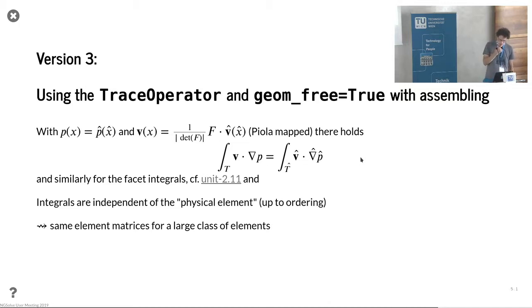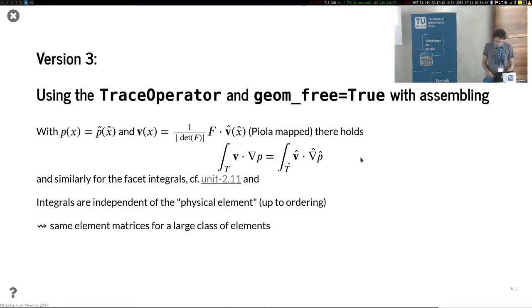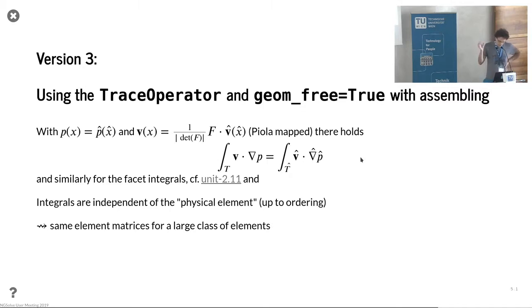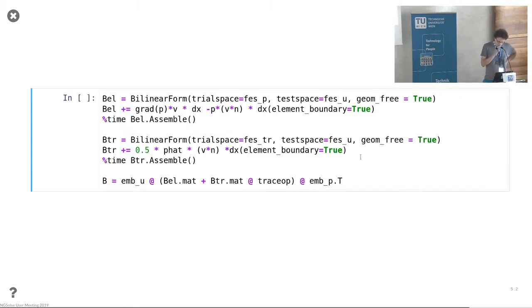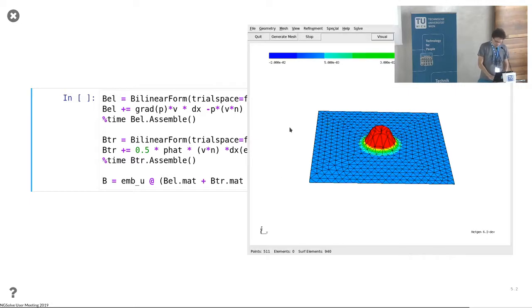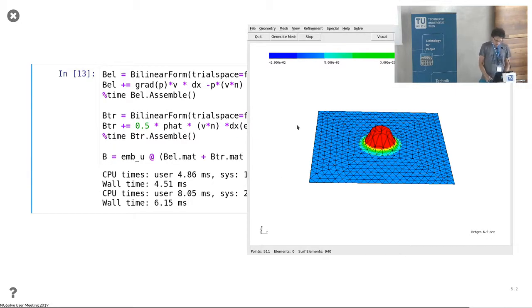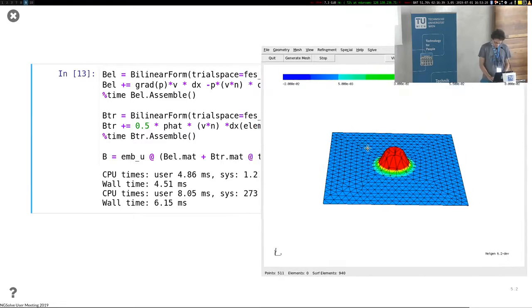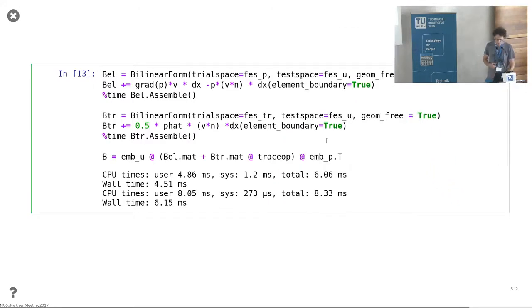Version 3 is what we now did not exploit yet: the possibility to exploit the geometry free integrals. We have the piola mapping involved, and that's what we want to exploit now. This is the same setup as before with trace operators, but now we add the flag geometry free.